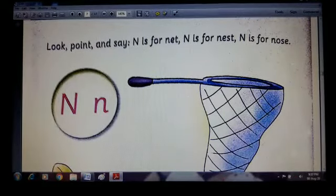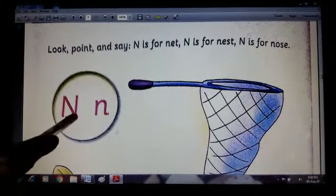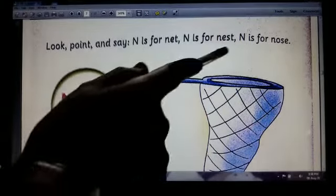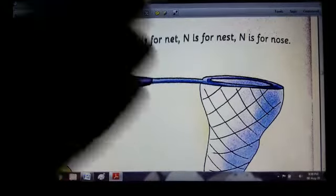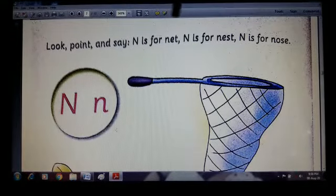The previous day we learned capital letter N and small letter N, and three words with N. So what are the words? N is for net, N is for nest, and N is for nose.